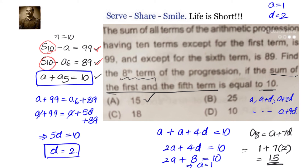Let us have a recap. The sum of all terms of the AP having 10 terms except for the first term is 99, and except for the sixth term is 89. We set up S10 = a + 99 and S10 = a6 + 89. Equating both gave us common difference d = 2. Using the condition that the first and fifth term sum to 10, we calculated a = 1. With a = 1 and d = 2, a8 = a + 7d = 1 + 14 = 15.